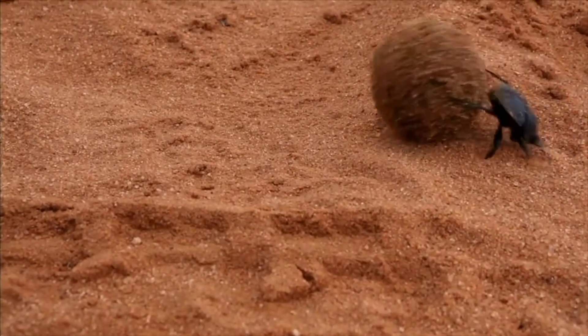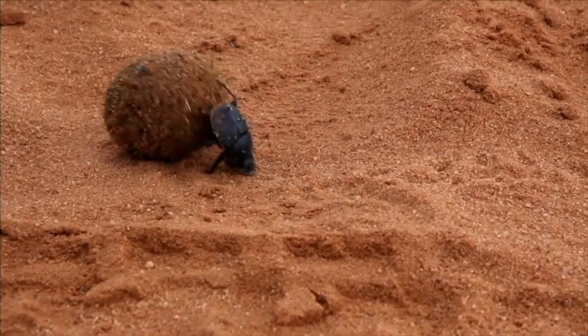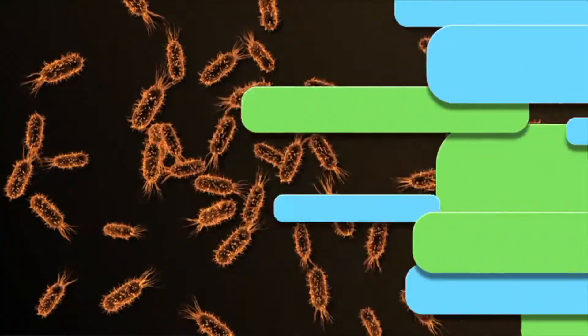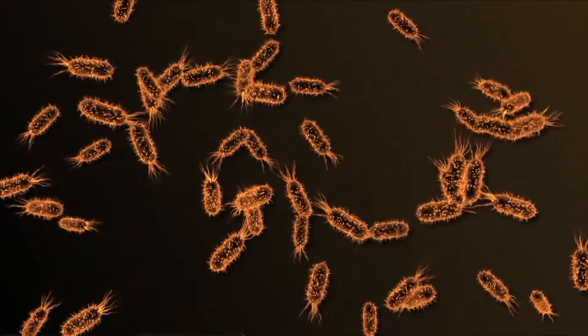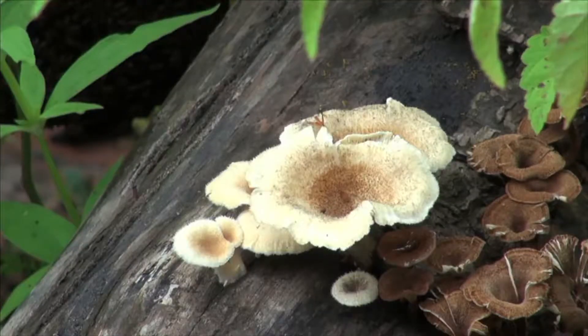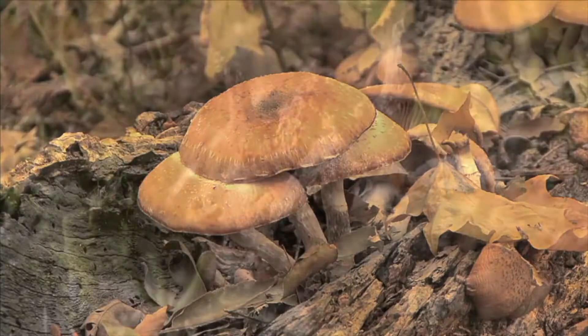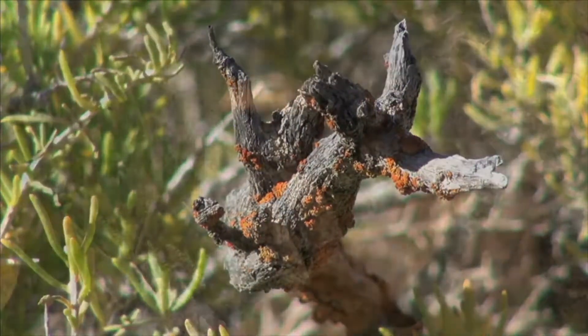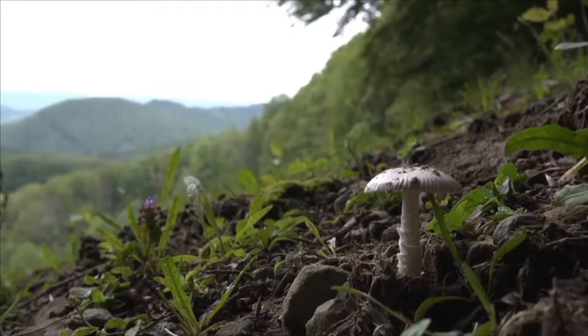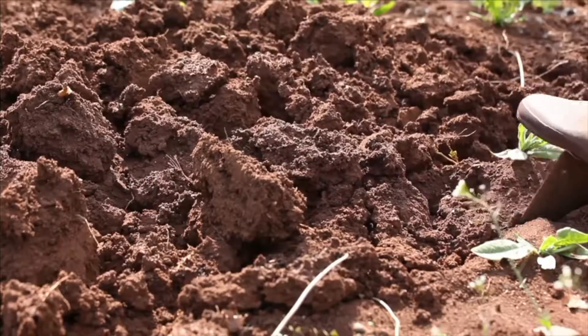Some insects, like the dung beetle, are decomposers. They collect animal droppings and form them into a ball. The dung beetle then places the ball in an underground nest to provide nutrients for its growing young. Some bacteria are decomposers too — bacteria helps turn dead organisms into nutrients. Fungi are another type of decomposer. Mushrooms, molds, and mildew are examples of fungi. Decomposers like mushrooms can start with a dead log or fallen leaves and recycle the material into rich soil, which is then reused by new plants back at the start of the food chain. Decomposers help recycle the nutrients found in waste back into the environment. If nutrients were not recycled, they wouldn't be available to living organisms.